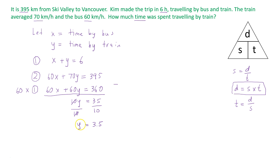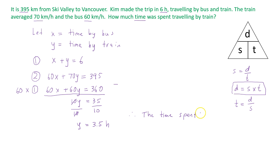That is the time spent traveling by train, because y represents the time spent traveling by train. The last thing to do is write a therefore statement. The times are in hours, since the distances are in kilometers, the speeds are in kilometers per hour, and the times are in hours. Therefore, the time spent traveling by train was 3.5 hours.